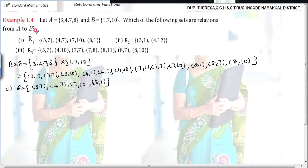3,7. Just let me take a different color. 3,7. Isn't it? 3,7. It is there. 4,7. Then 7,10. 8,1. Is it ok?